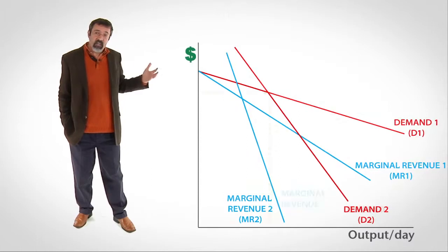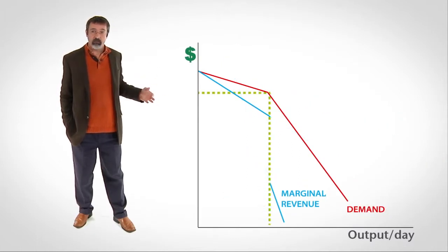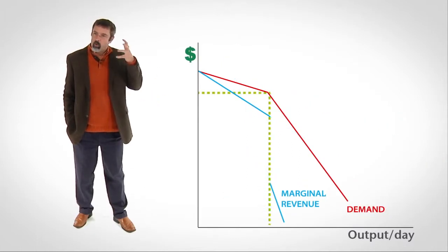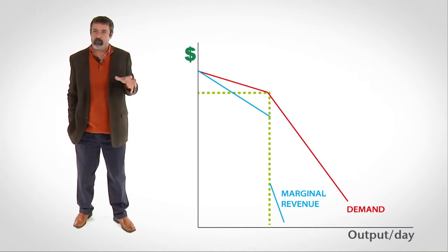Now, let's remove the sections of the demand and marginal revenue curves that the oligopoly doesn't use. What we have left is called a kinked demand curve, but it's actually the portions of two separate demand curves.